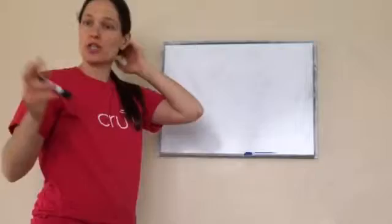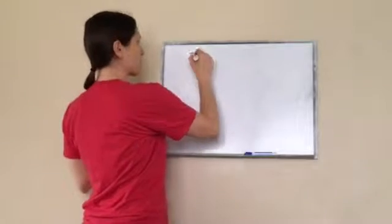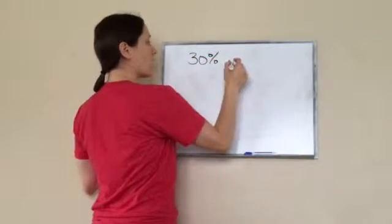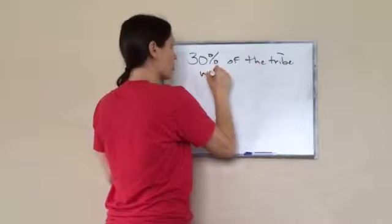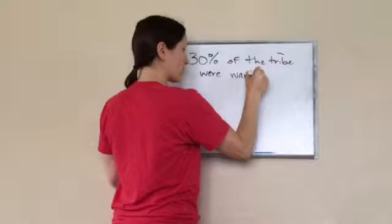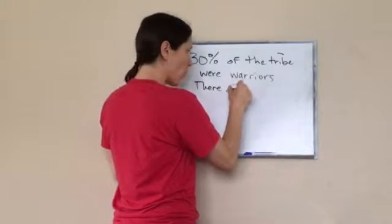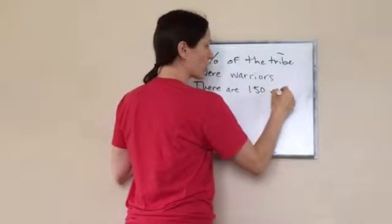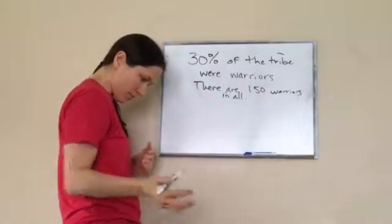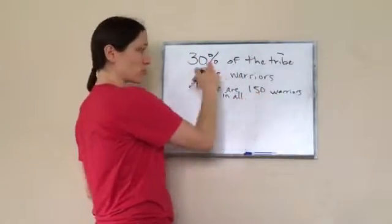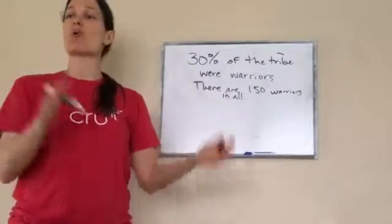Okay, so listen to this because we're going to do two ways to do this problem. Okay, here's what it says. 30% of the tribe were warriors. Then it says there are 150 warriors in all. And now I want to know this. What is the population of the tribe?